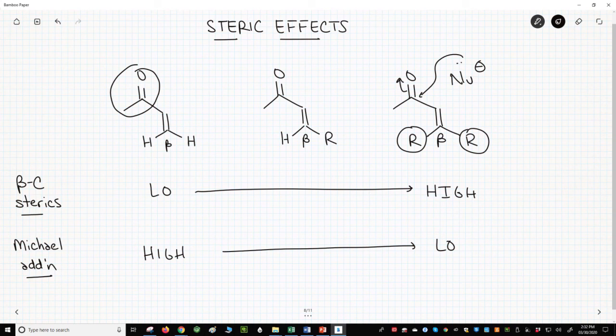So those are some important details for Michael acceptors. Michael acceptors are double bonds with an electron withdrawing group. Minimizing steric hindrance around the electrophilic carbon makes a Michael addition more likely.